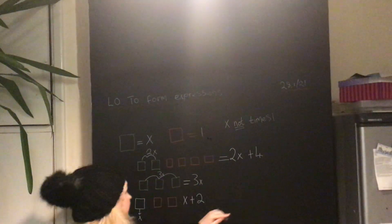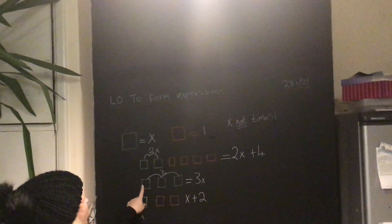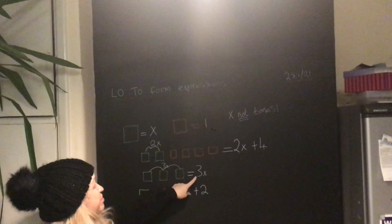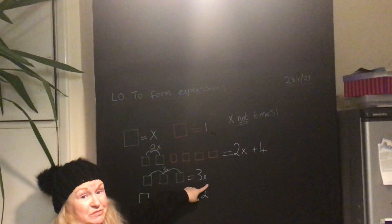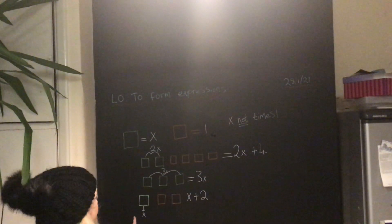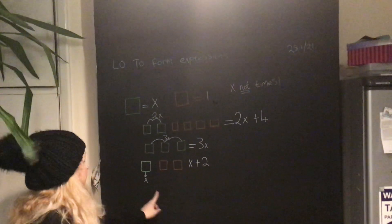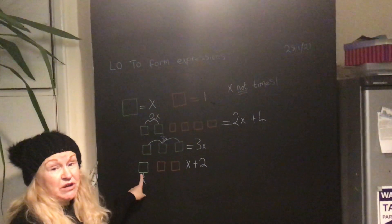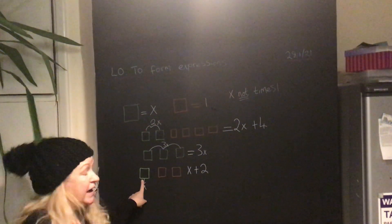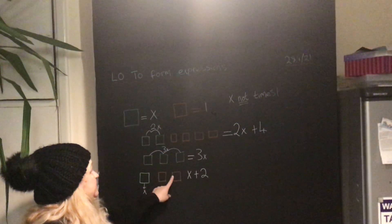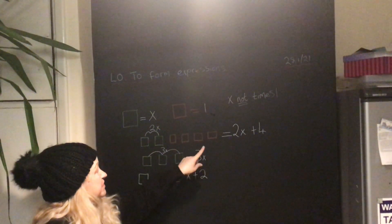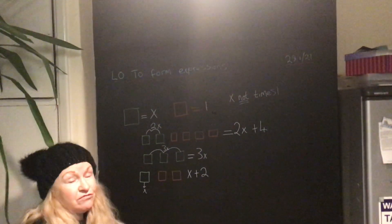Looking at this one, I've got 1, 2, 3 x, so that would be 3x for that one. And this one would just be x because there's just one of them. You don't need to put 1x, just x add 2, and that would be my sum for that.